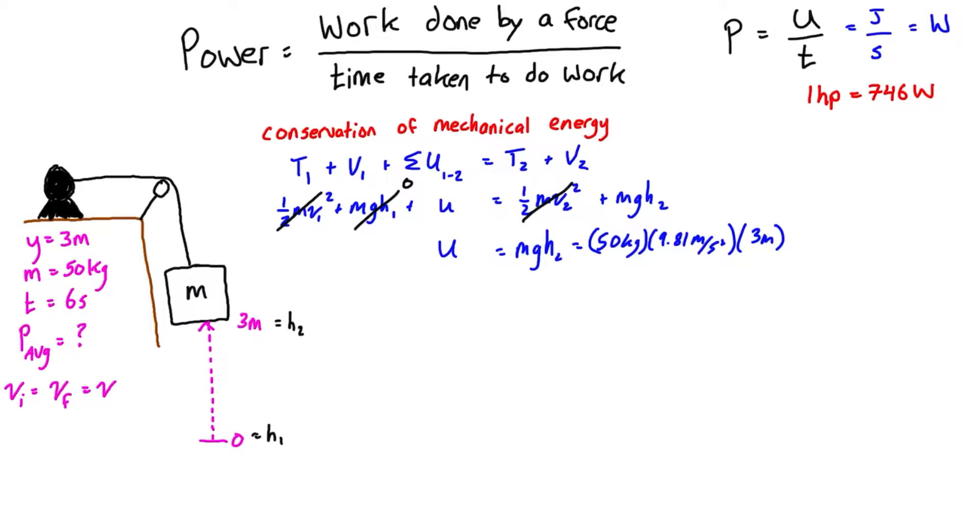That all simplifies to the work being equal to 1471.5 joules. Now if we plug this into our power equation where average power is equal to work done over the time taken to do the work, we can write it as P average equals U over t. We just plug in what we have, so work is 1471.5 joules.